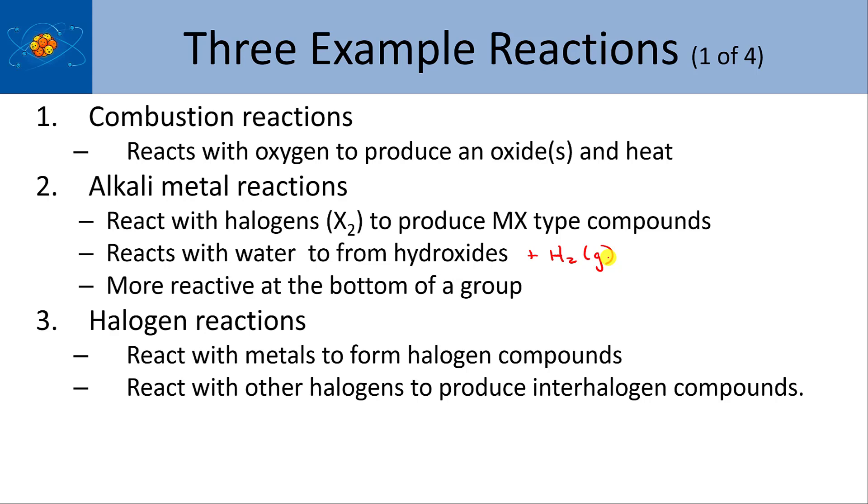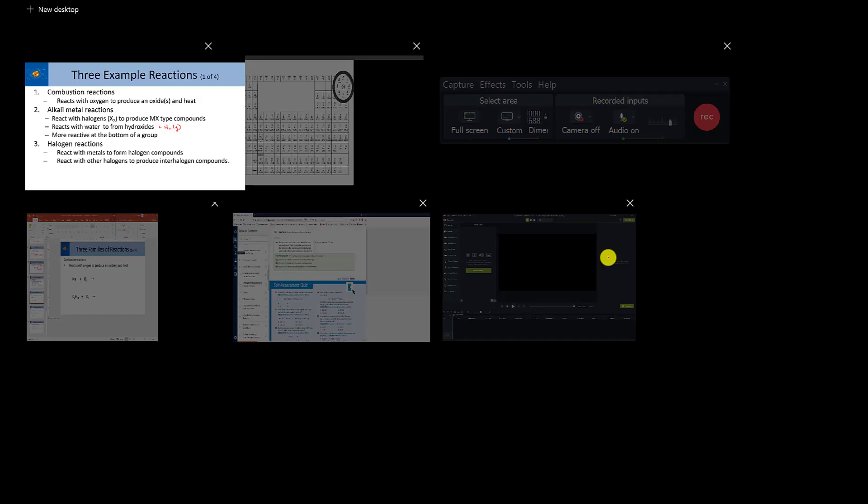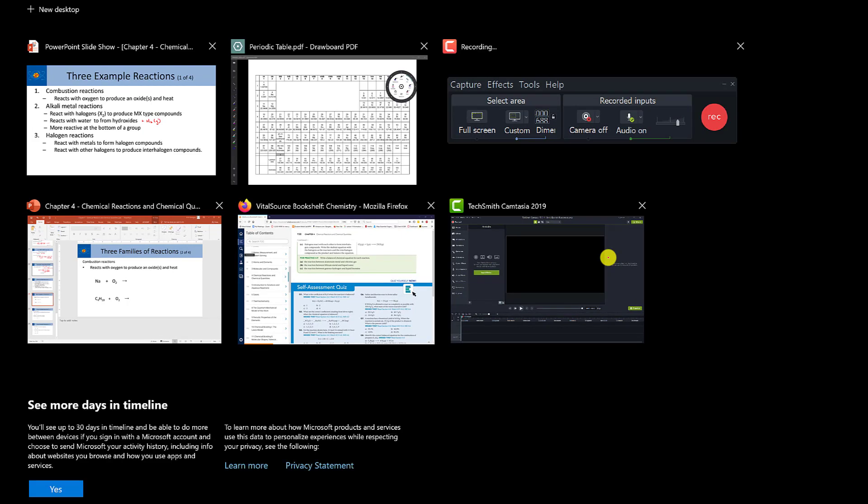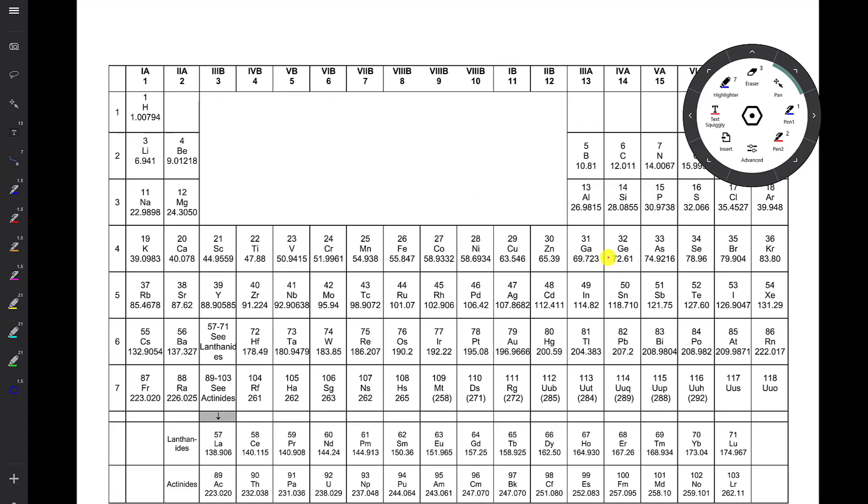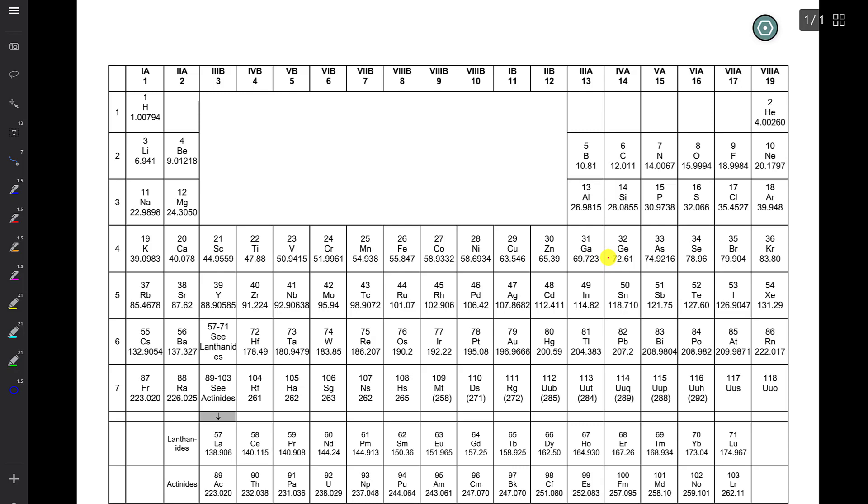The last class are the reactions of the halogens. The halogens will react to form ionic halogen compounds. For example, if you react chlorine with sodium. Halogens, by the way, going back to our periodic table, halogens are those elements in group 7A.